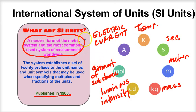Before we talk about the metric system in more detail, let's look at the United States customary units of measurement — how we measure things in the US — and compare them to the metric system. By the end of this video I hope you'll find that the metric system just makes more sense to use. It's based on powers of 10 and sliding a decimal to the right or left when making conversions.